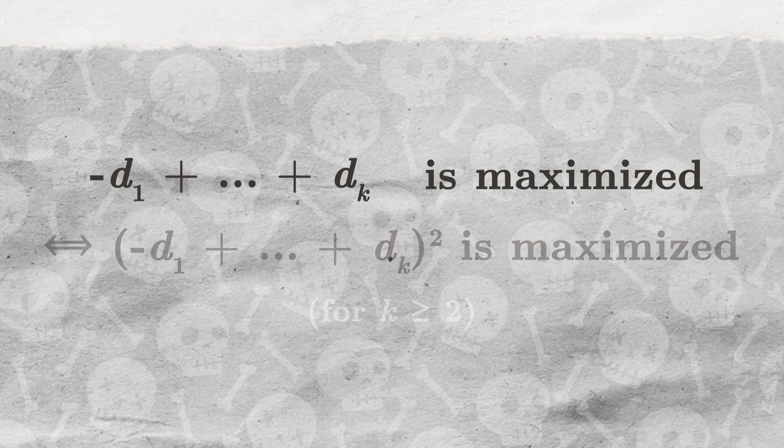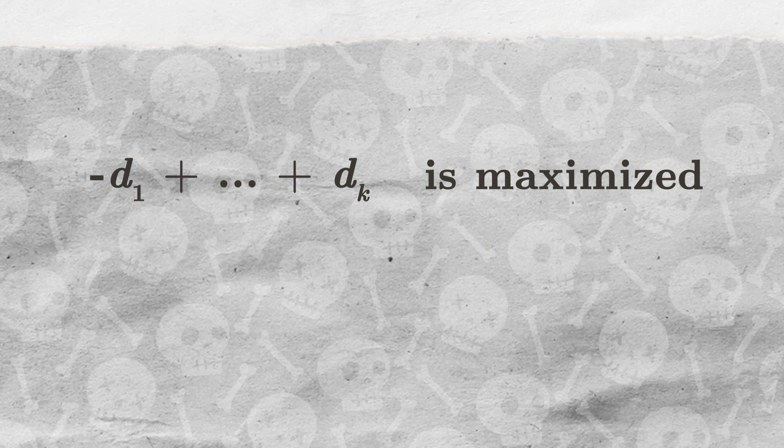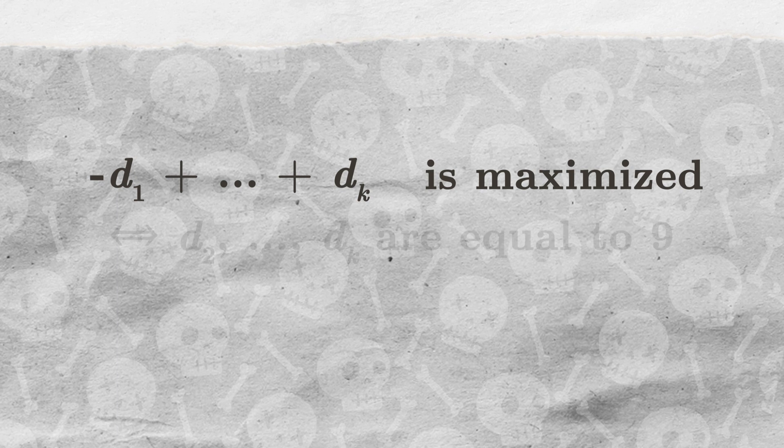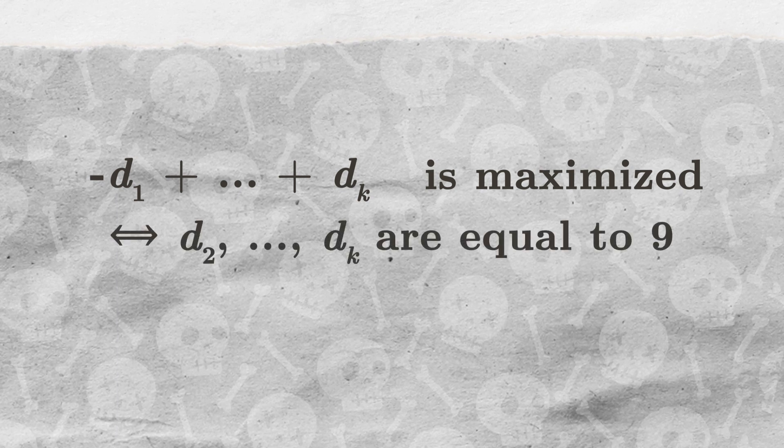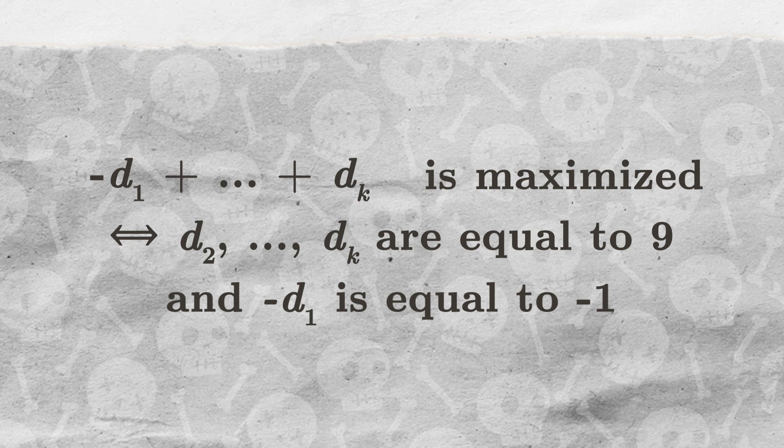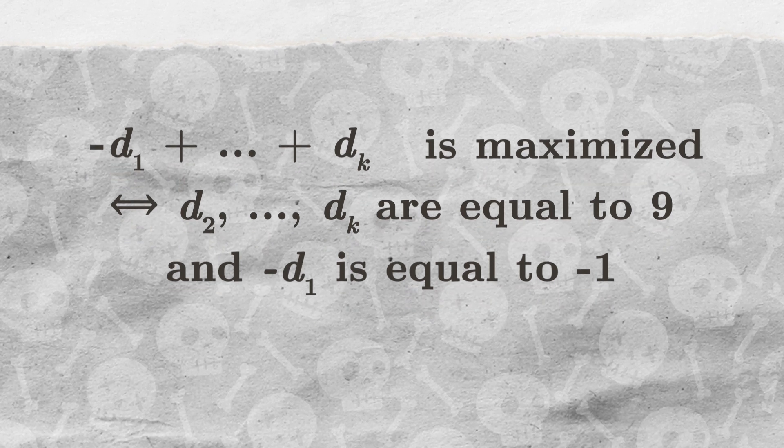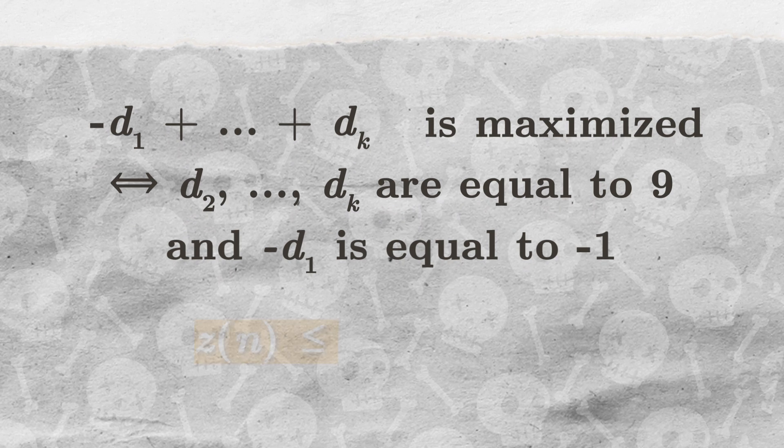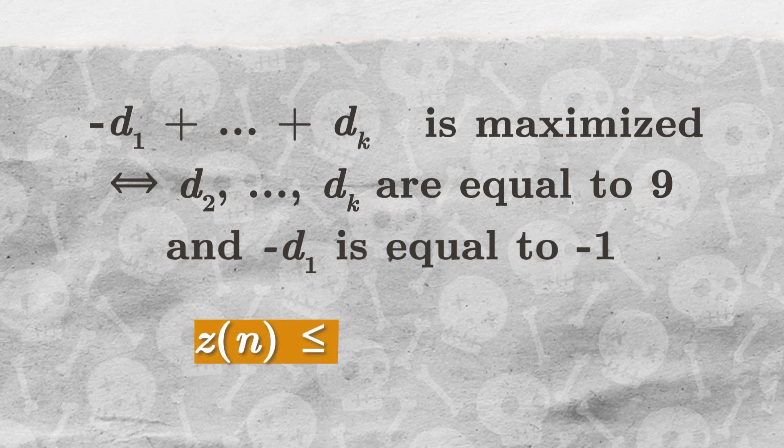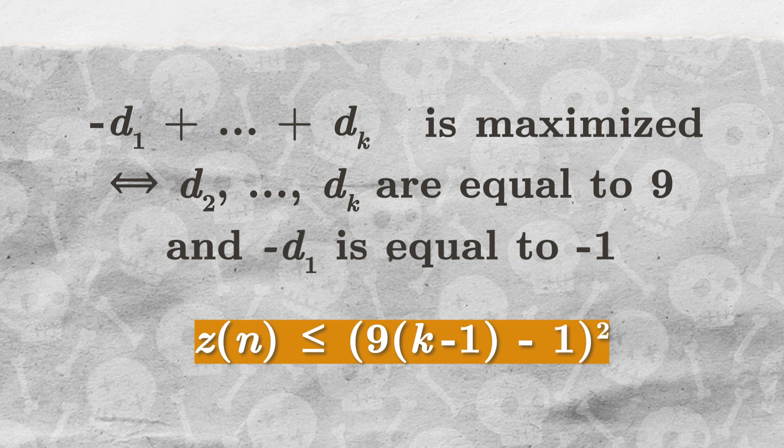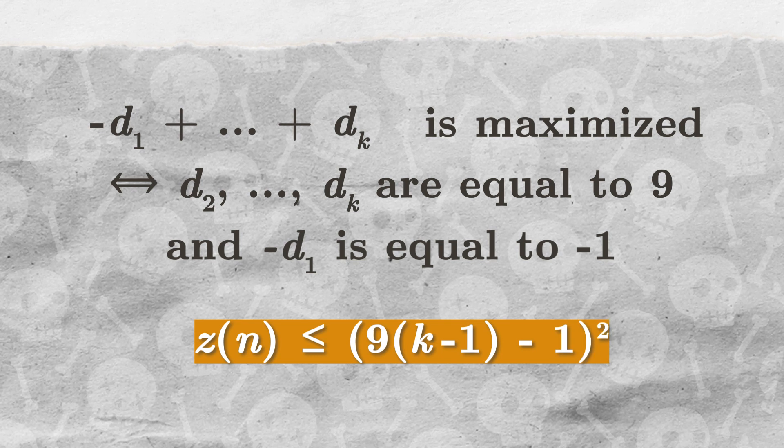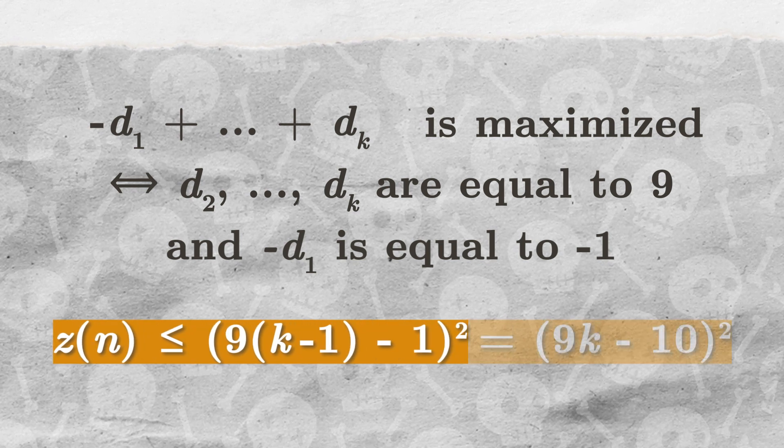Now, it is easy to see that minus d1 plus dot dot dot plus dk is the greatest when all of the digits d2 up to dk are 9s and minus d1 is equal to minus 1. Since n has exactly k digits, we have that z of n is smaller than or equal to 9 times k minus 1 minus 1 squared, which is equal to 9k minus 10 squared.